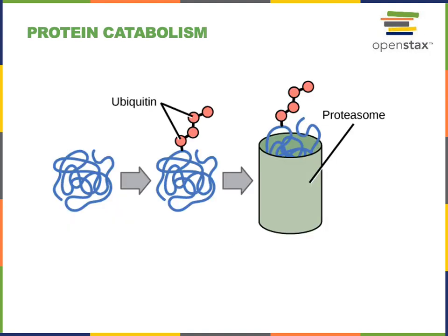Protein catabolism is the process where proteins are broken down to release amino acids. There's a variety of proteolytic enzymes found within cells that can catalyze the hydrolysis of peptide bonds in polypeptides to release amino acids. One of those organelles is the lysosome. Another is called the proteasome. The proteasome will specifically recognize misfolded or worn-out proteins that have been labeled with a tag known as ubiquitin. A protein with a ubiquitin tag has been marked for protein catabolism, and the proteasome will then catalyze hydrolysis, breaking down the polypeptide to release amino acids.